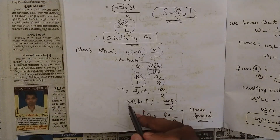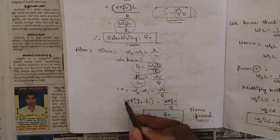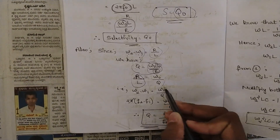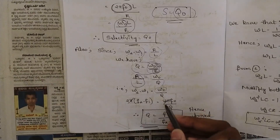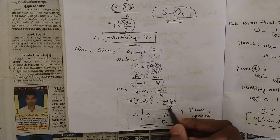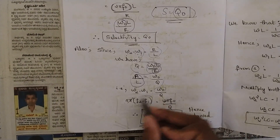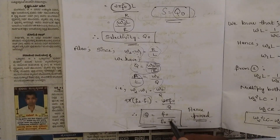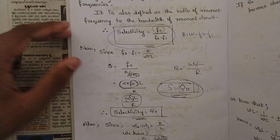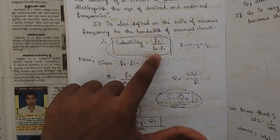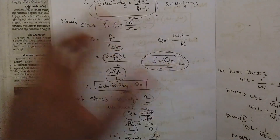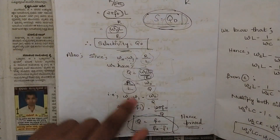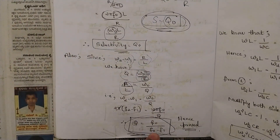Since ω equals 2πf, substituting: 2π(f2 minus f1) equals 2πf0 divided by Q. The 2π cancels, leaving f2 minus f1 equals f0/Q, or rearranging, Q equals f0 divided by (f2 minus f1). Hence we have proved that selectivity equals the quality factor. We defined selectivity as f0/(f2 minus f1), and we proved that selectivity equals Q0, so Q equals f0/(f2 minus f1) — same as selectivity.